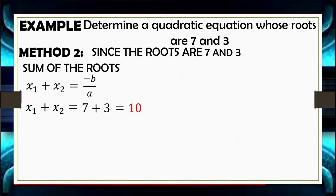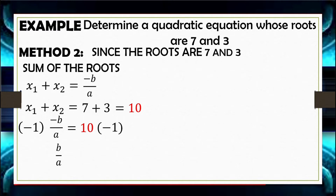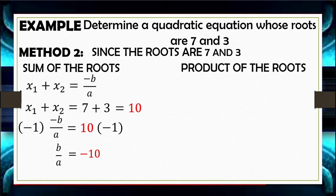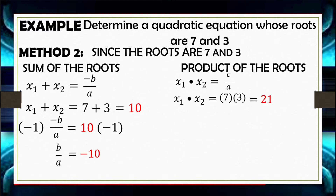Since the sum of the roots equals negative B over A and the sum is 10, then negative B over A equals 10. To make the left side positive, we multiply by negative 1, giving B over A equals negative 10. For the product of the roots, we use the expression C over A. Multiplying 7 and 3, the product is 21, so C over A equals 21.